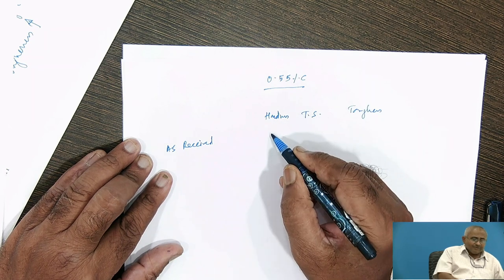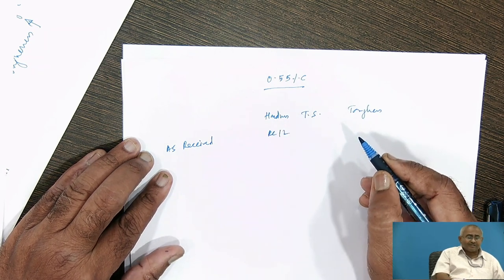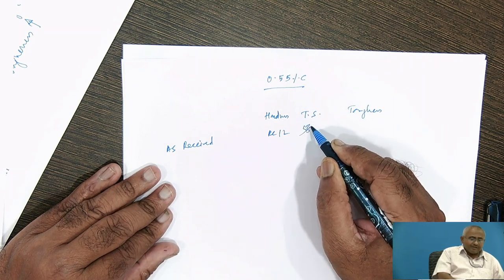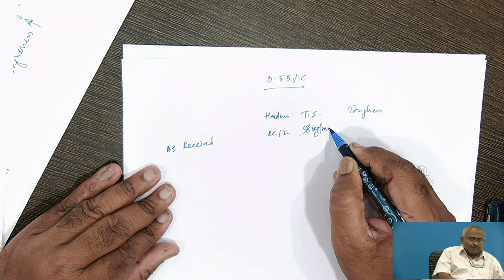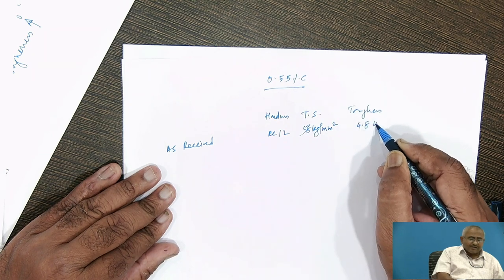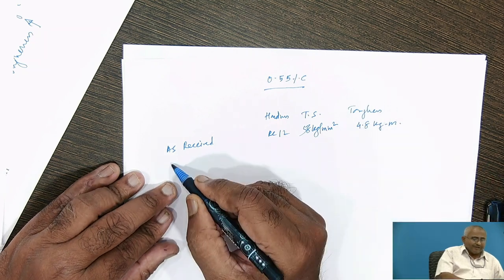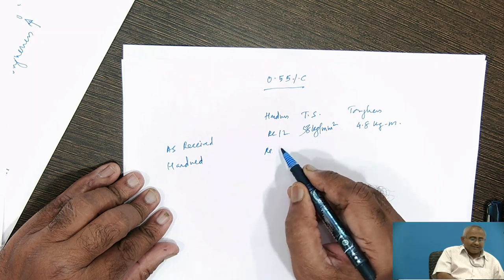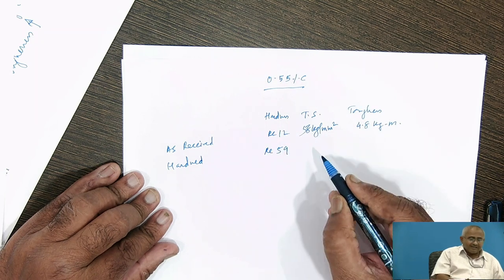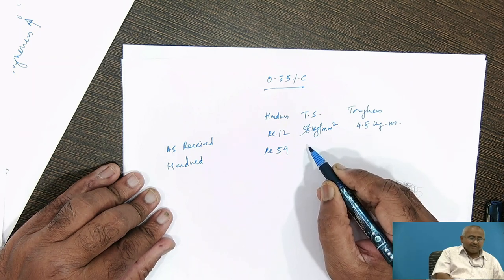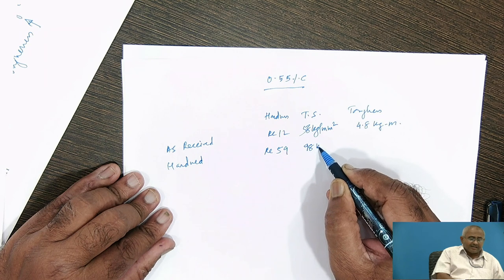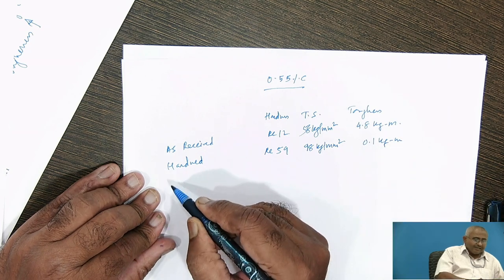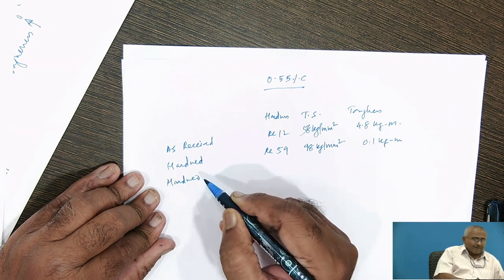In the as-received condition — without any treatment — hardness is RC12 (Rockwell C scale), tensile strength is 58 kg/mm², and toughness is 4.8 kg·m. After hardening, hardness rises to RC59, tensile strength becomes 98 kg/mm², but toughness drops dramatically to 0.1 kg·m. After hardening and low temperature tempering, hardness is RC52, tensile strength is 90 kg/mm², and toughness is 0.5 kg·m — still very low.